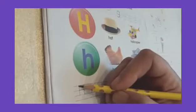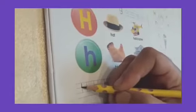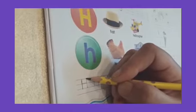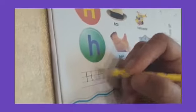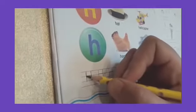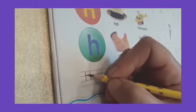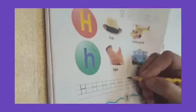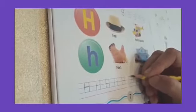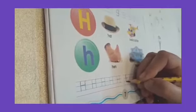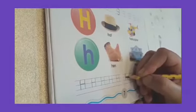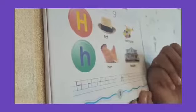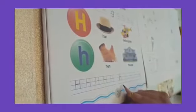Start at the top line all the way down to the third line, straight down. Then again, top line all the way down to the third line, and then a line in the middle. H. Now small H. Start at the top, all the way down to the third line, back at the second line, across, over and down. Small H.